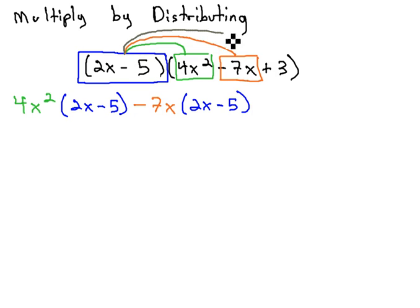Finally, we'll distribute the 2x minus 5 by the positive 3. We'll see the positive 3 times the 2x minus 5.